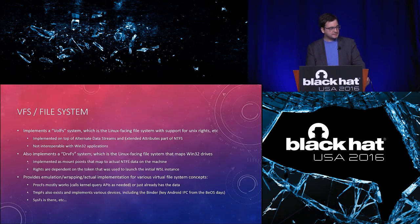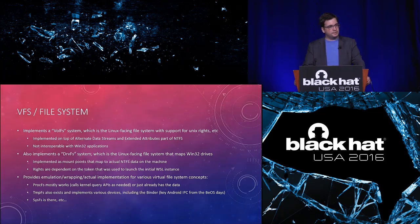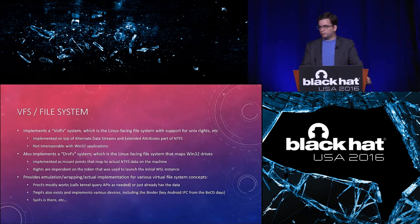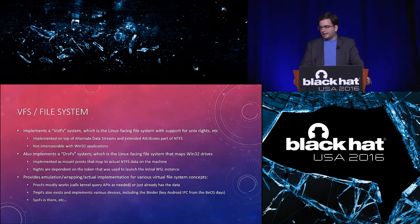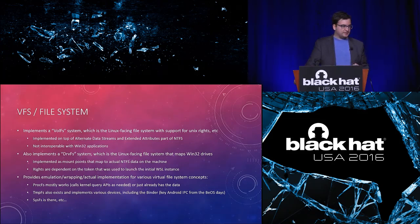The other interface is the file system or VFS. There are two main file system groups. One is called VolFS — your Linux-facing partition — with support for Unix permissions: chmod, chown. This uses NTFS alternate data stream support and extended attribute support to emulate Linux file system specifics on top of NTFS. Because of that, this directory on your file system isn't compatible with Win32 — if you drag a Win32 file in from Explorer it won't have the right attributes or data streams.